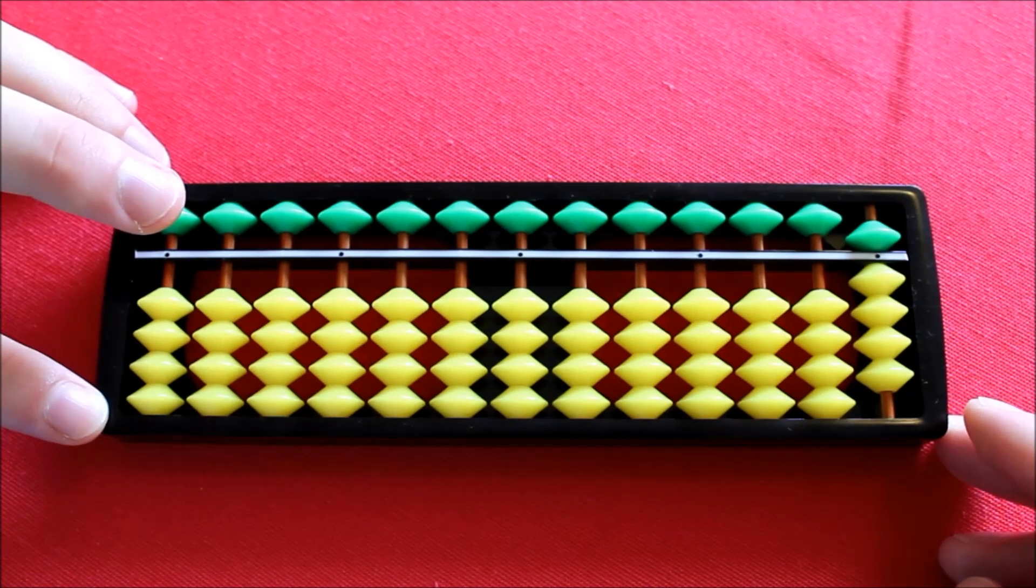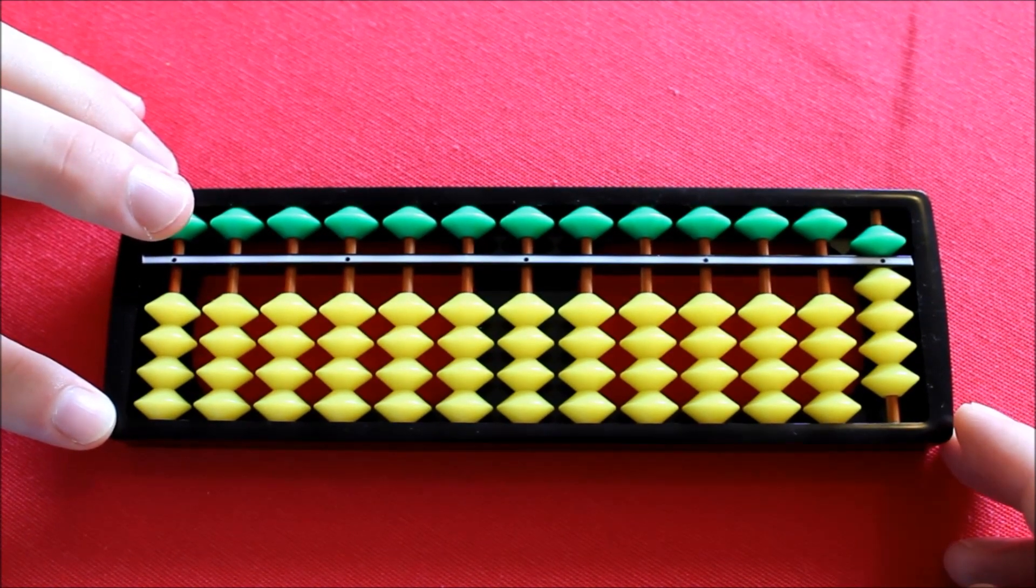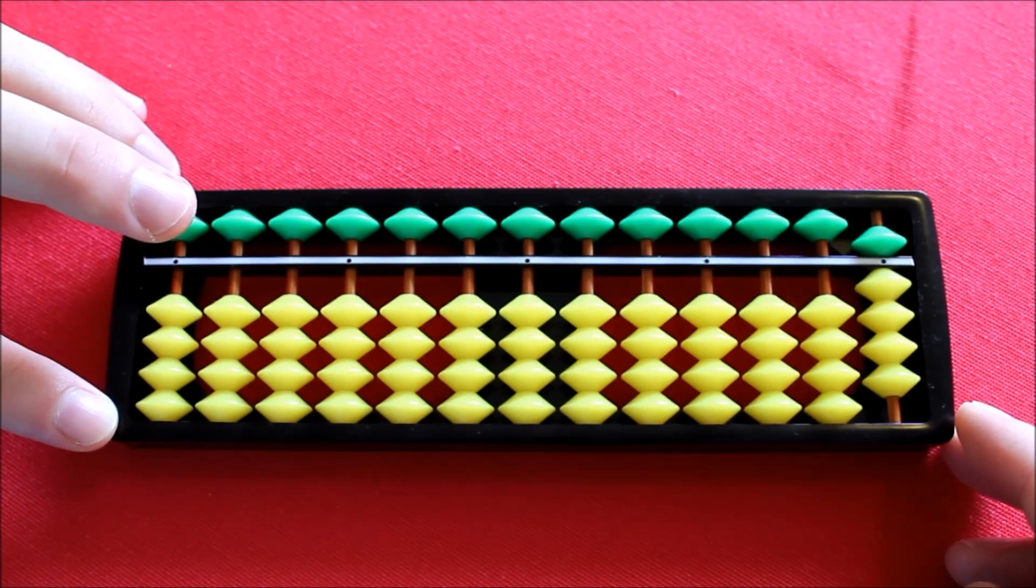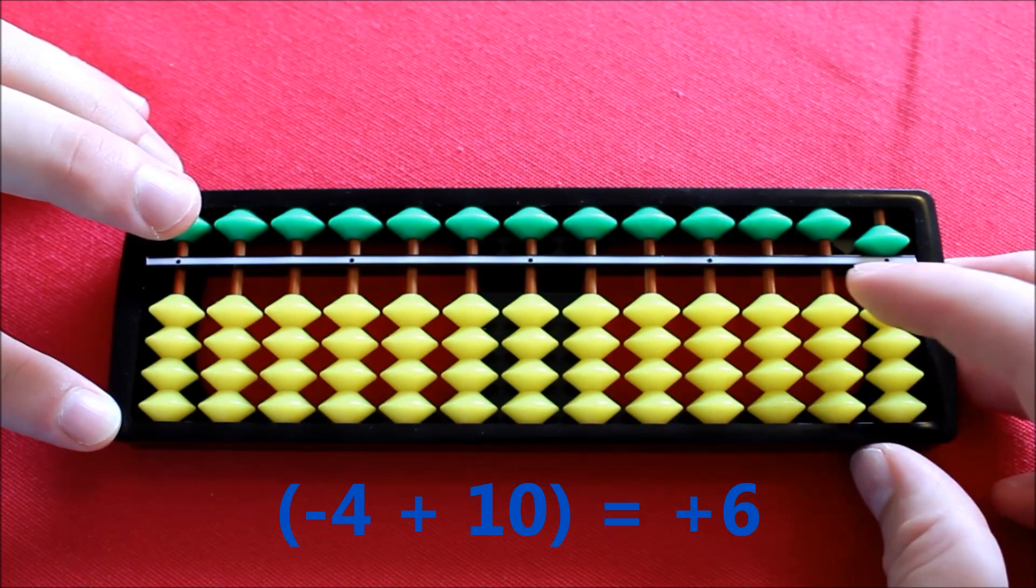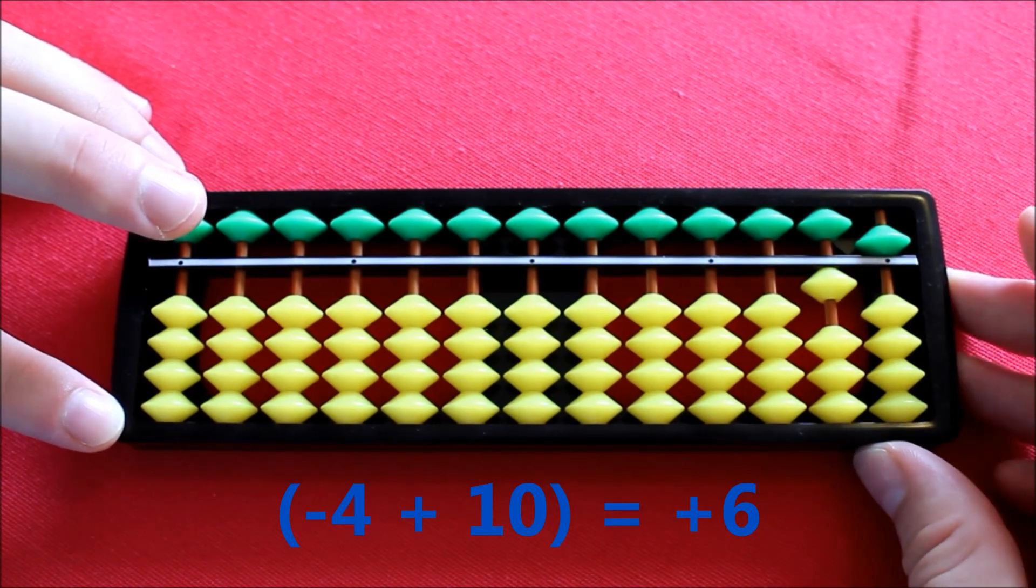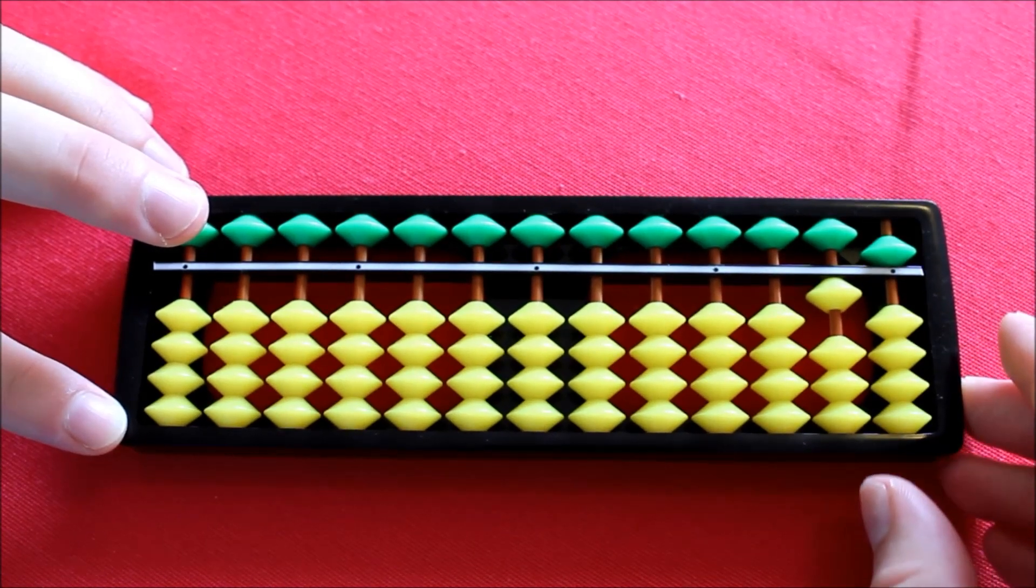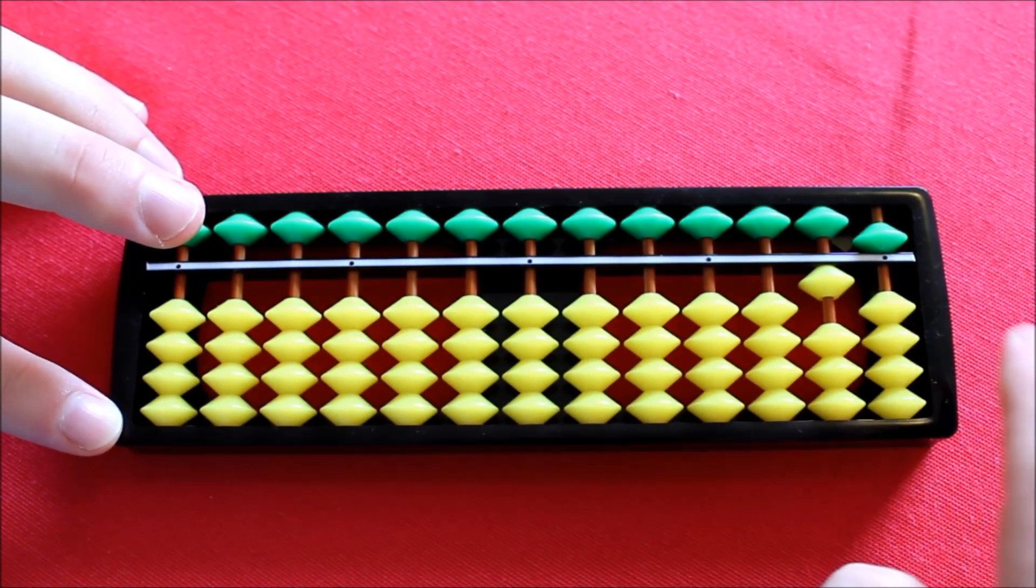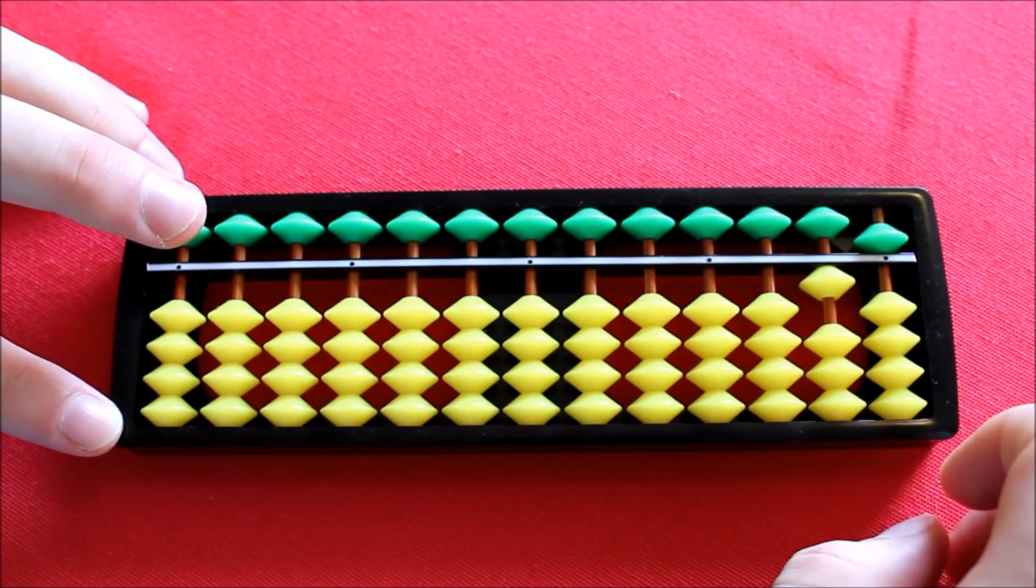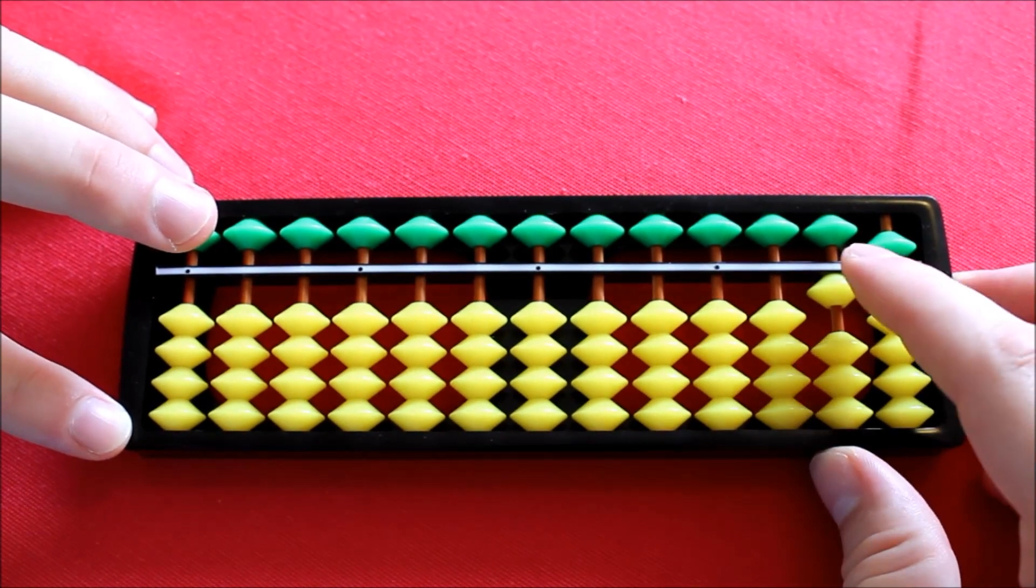But now to add a further 6, we're going to have to make use again of the next column. This time the 10 that we add is going to be 4 more than the 6 we wish to add. So firstly, I subtract by 4, then I add my 10 to the next column for a net result of having added 6. And what are we left with on the Soroban? Well, we have a 1 here and a 5 here. That's 15. So 9 plus 6 equals 15.